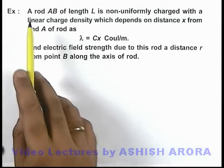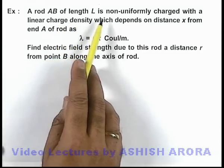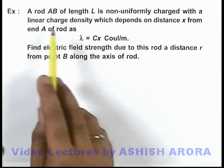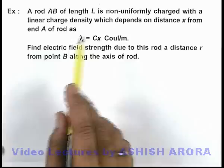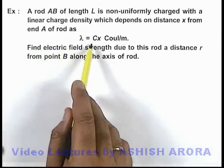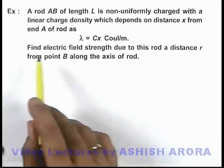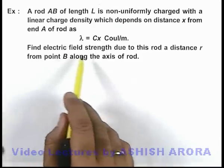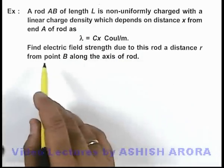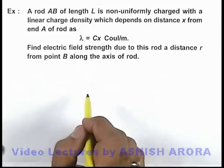In this example, a rod AB of length l is non-uniformly charged with a linear charge density that depends on the distance x from end A of the rod as λ = cx coulombs per meter. We are required to find the electric field strength due to this rod at a distance r from point B along the axis of the rod.